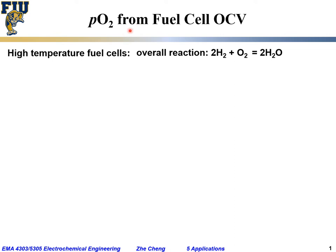With fuel cell open circuit voltage, or OCV, we can quite often use it to estimate the partial pressure of oxygen. We can use this principle to measure the partial pressure of oxygen in a fuel gas, or we can use it to measure the partial pressure of oxygen in a partial combustion chamber.